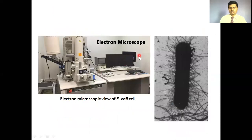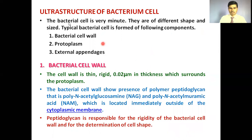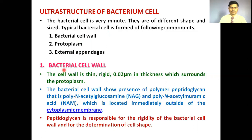To study the structure of the bacterial cell we must use an electron microscope, and the structure studied by electron microscope is called the ultrastructure. The bacterial cell mainly shows three components: the outer bacterial cell wall, the inner protoplasm, and external appendages present outside the cell wall.